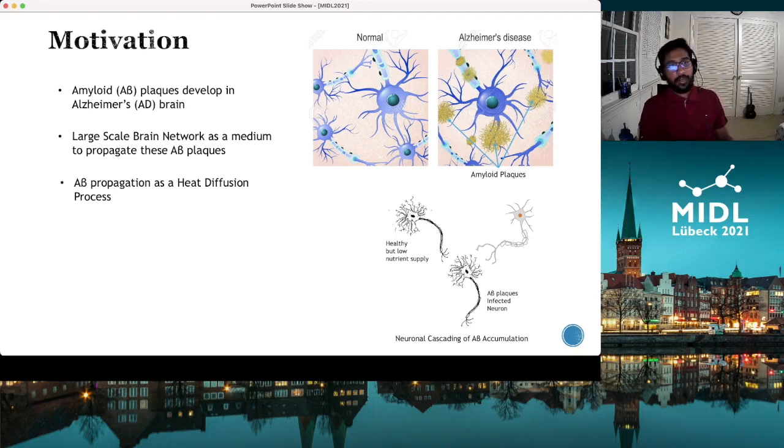In this way, amyloid plaques kind of travel through the brain using white matter tracts. In this paper, we try to model this amyloid beta propagation as a heat diffusion equation.